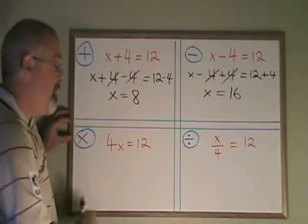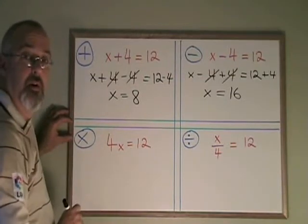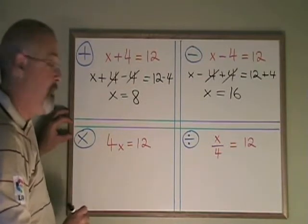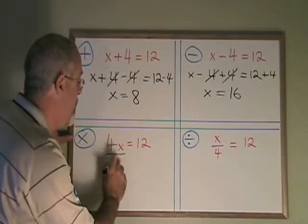Multiplication. Here the x is being multiplied by a 4, and the opposite of multiplication is division. So I have to divide that side by a 4.